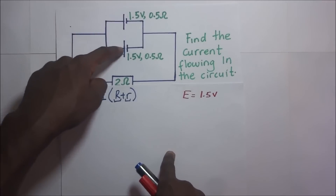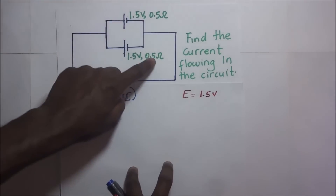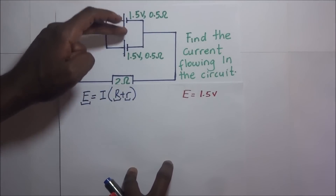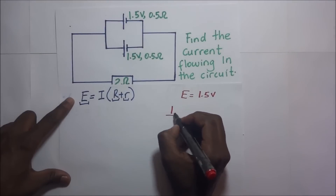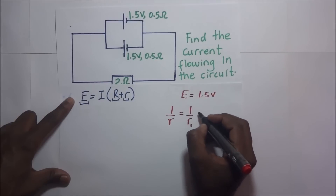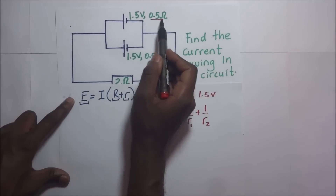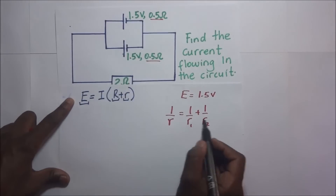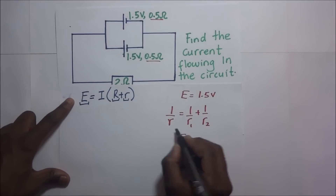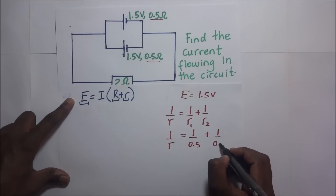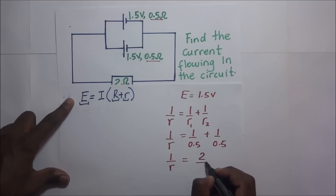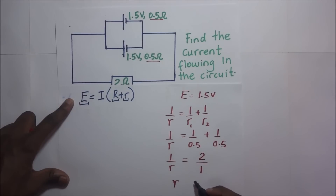Now looking at the internal resistances: one is 0.5 ohms and the other is also 0.5 ohms, and these two internal resistances are in parallel. For resistors in parallel, 1 over R equals 1 over R1 plus 1 over R2. So 1 over R equals 1 over 0.5 plus 1 over 0.5, giving 1 over R equals 2 over 0.5. Therefore R equals 0.5 divided by 2 ohms.